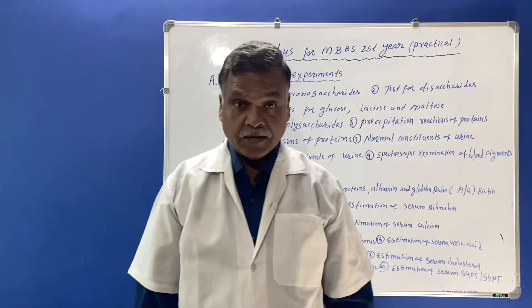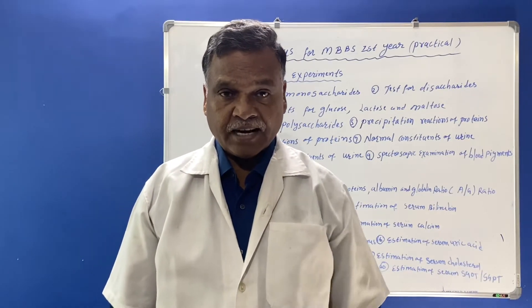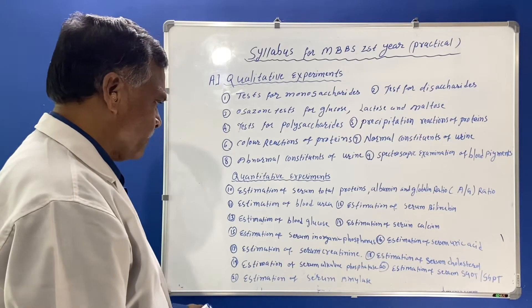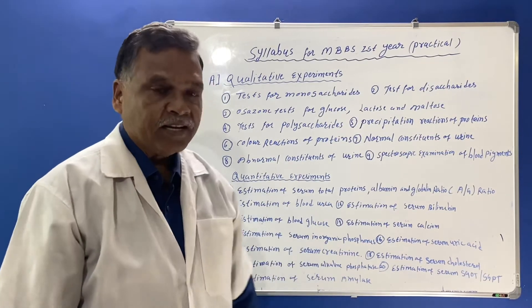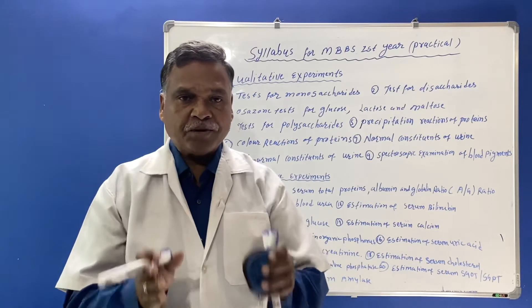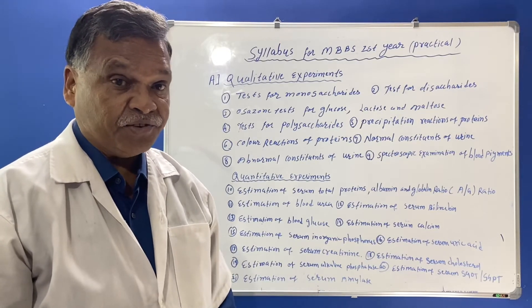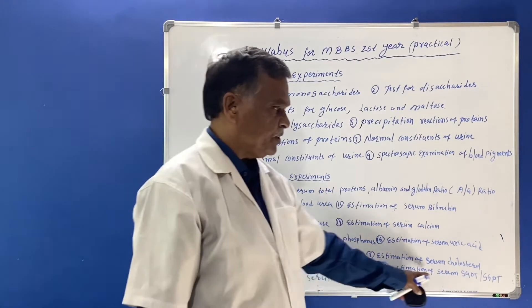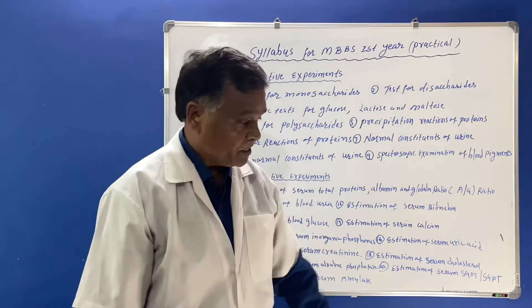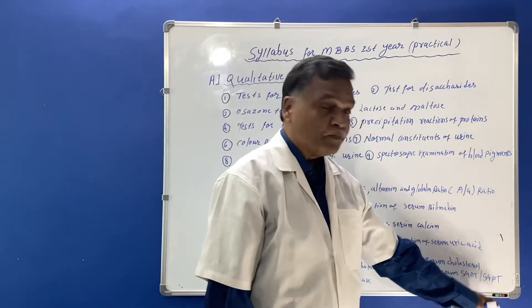If cholesterol crosses the normal range, diseases can occur — known as cardiac disease. Heart diseases can occur due to elevated levels of cholesterol. Then estimation of serum alkaline phosphatase, which is an important enzyme in the body. If elevated levels are found, it can cause a number of diseases. Also, estimation of serum enzymes SGOT — serum glutamic oxaloacetate transaminase — and SGPT — serum glutamic pyruvate transaminase. These are transaminases present in the body under normal conditions.